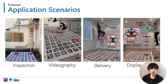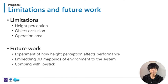Since this is the first prototype, there are still some limitations. For example, we did not consider the height perception problem, which may affect the user when the drone flies above 10 meters. Object occlusion is also a problem if there are many obstacles, and the operational area is limited by the accuracy of the camera and mobile device. For future work, we would like to make an experiment to see how height perception affects performance, try to embed 3D mappings of the environment to avoid occlusion problems, and combine with a joystick to extend the operation area.